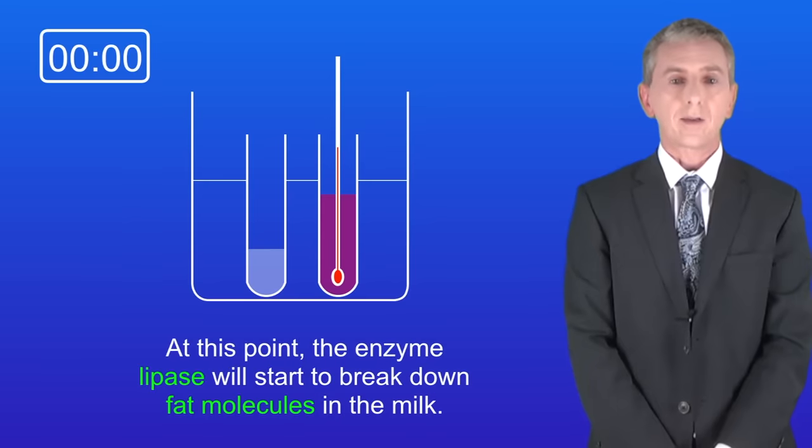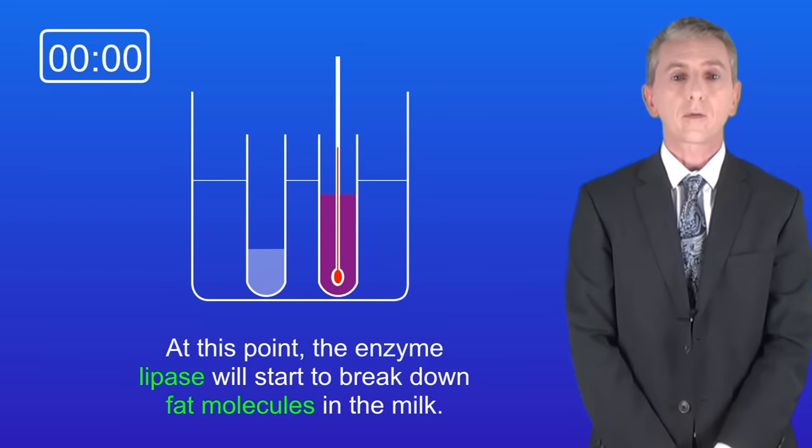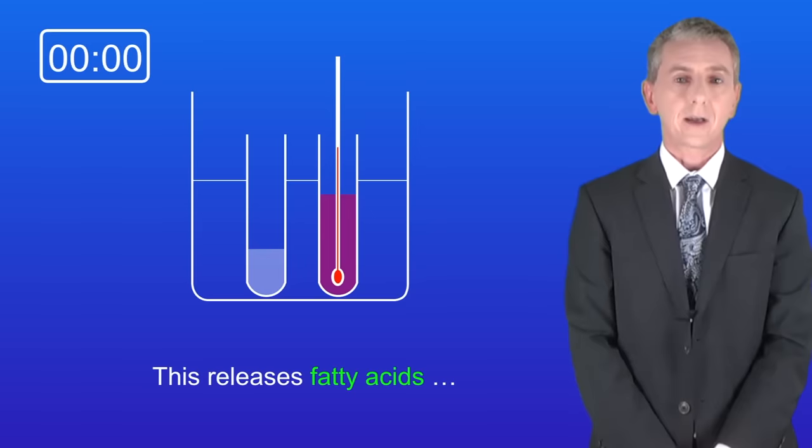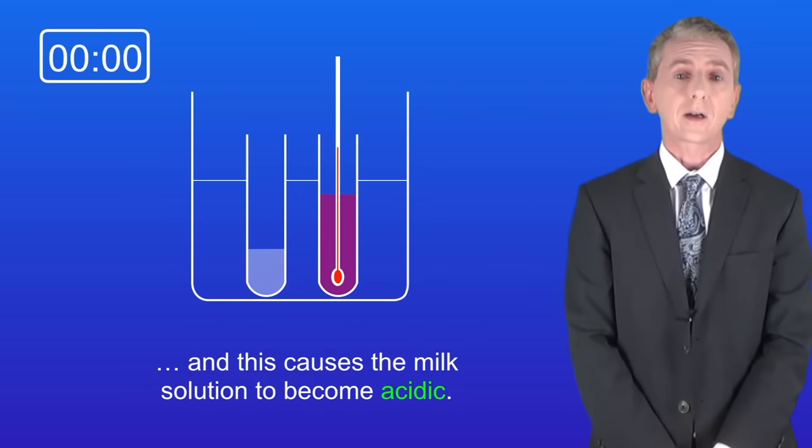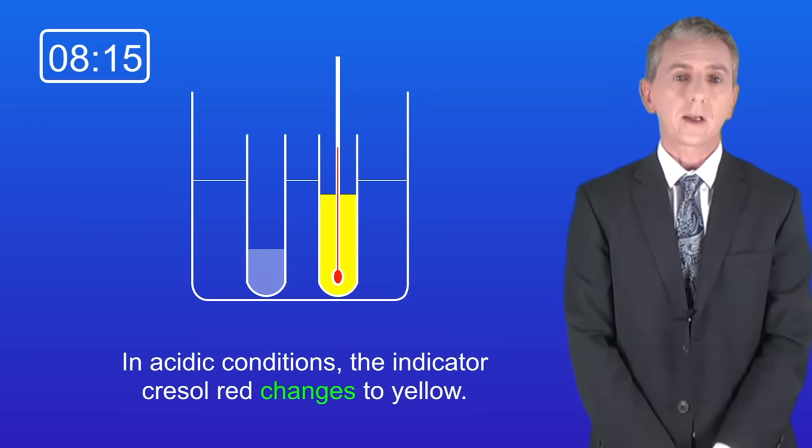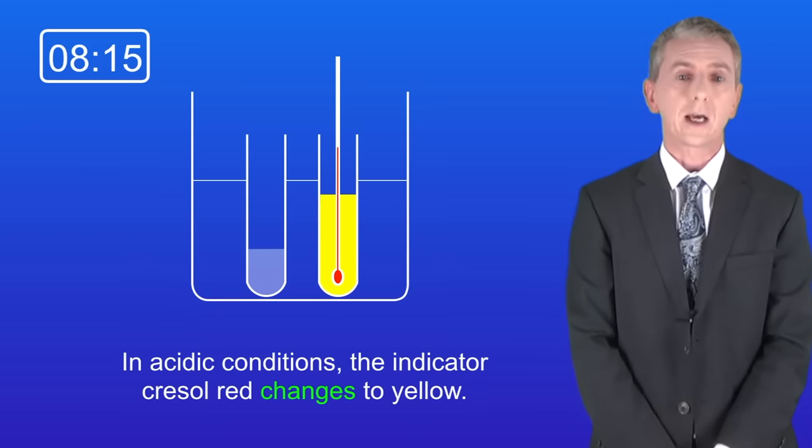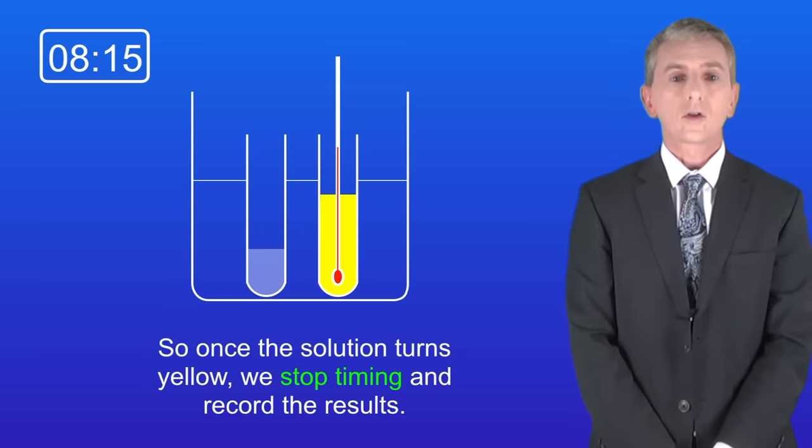At this point, the enzyme lipase will start to break down fat molecules in the milk. This releases fatty acids, and this causes the milk solution to become acidic. In acidic conditions, the indicator cresol red changes to yellow. Once the solution turns yellow, we stop timing and record the results.